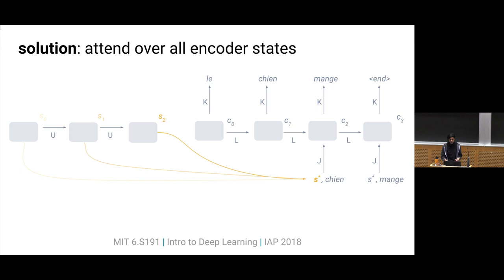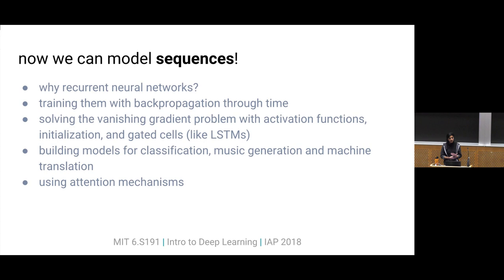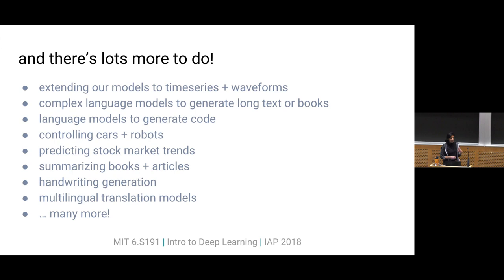I hope you now have an idea of why we need a different framework to model sequences, how recurrent neural networks solve some of the issues we saw at the beginning, and how to train them and address vanishing gradient problems. You can imagine using these same recurrent neural networks for modeling time series or waveforms, or doing other interesting sequence prediction tasks like predicting stock market trends or summarizing books and articles. Maybe you'll consider some sequence modeling tasks for your final project. Thank you.